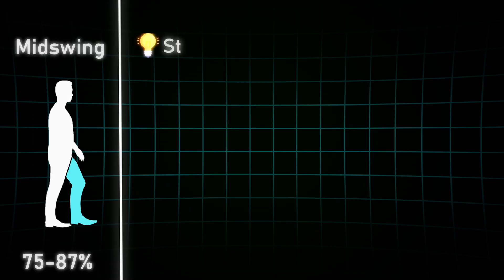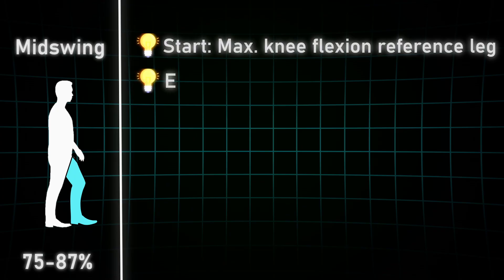In the mid-swing phase, the leg is now actually swinging through. This phase starts at maximum knee flexion and ends when the lower leg is vertical to the ground. The main focus here is not to trip.